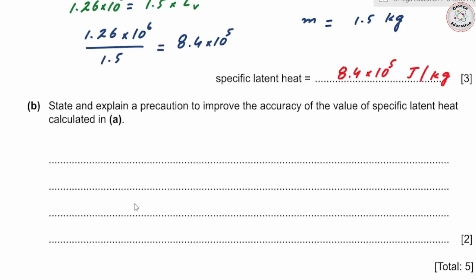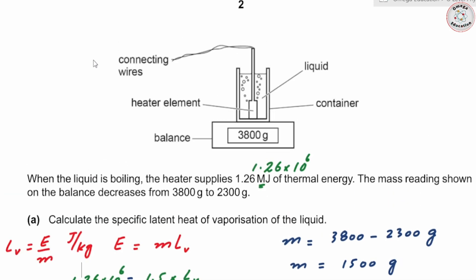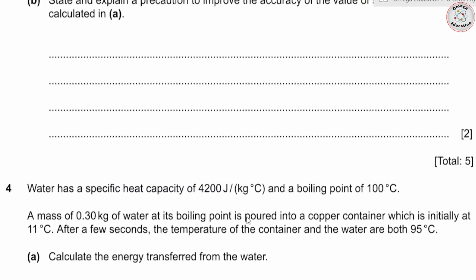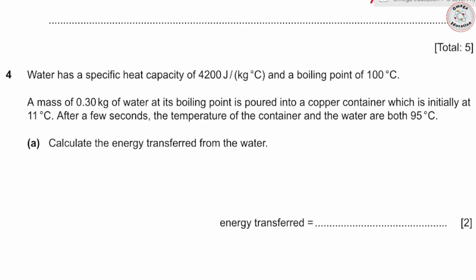The next part asks for a precaution to improve the accuracy of the specific latent heat calculated. Since the energy supplied to the liquid will have some lost to the surroundings, we need to reduce heat loss by using insulation around the container. Since L_v is calculated using E/m, making the value of E more accurate will make our answer for L_v more accurate.